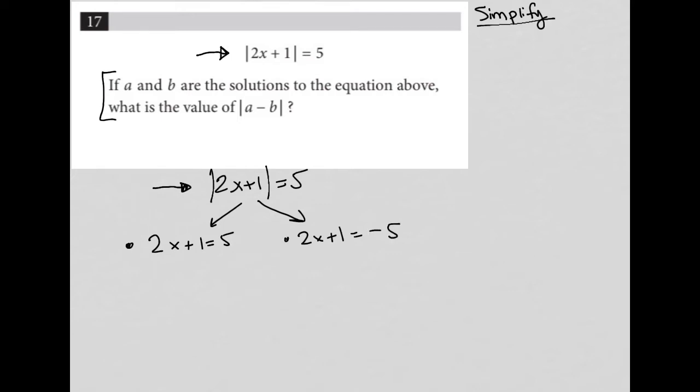So when I solve this first side, I get 2x equals 4, and therefore x is equal to 2. So that's one possibility.